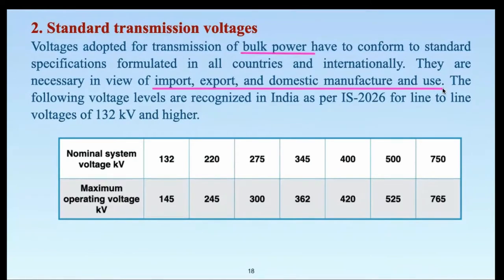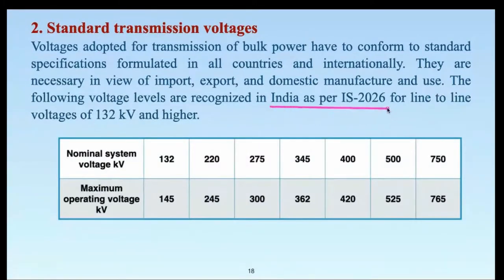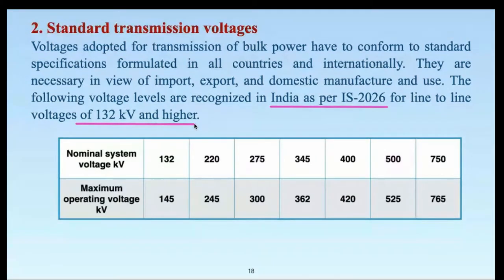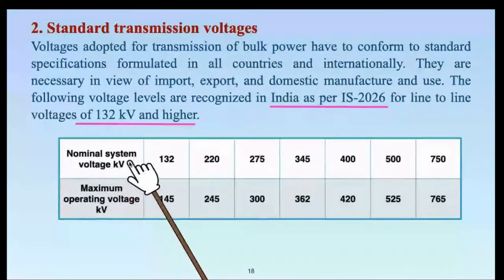The following voltage levels are specified in India as per Indian Standard IS 2026. These are voltage levels for bulk power transmission in India — line-to-line values of 132 kV and higher. So bulk power transmission takes place at voltage levels of 132 kV and higher. These are defined in two different domains.